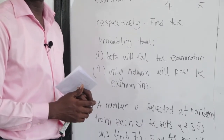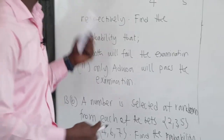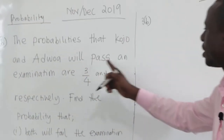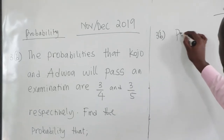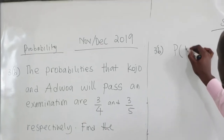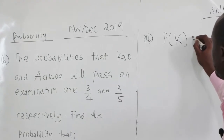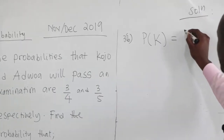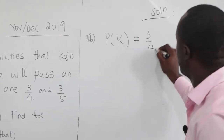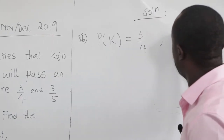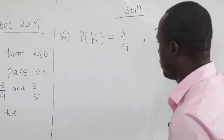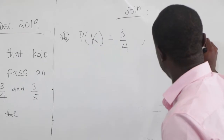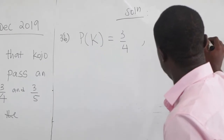How do you solve questions like this? From the question, we have been told that the probabilities that Kujou and Ajuwa will pass an examination are: the probability that Kujou will pass, that is P of K, is 3 over 4. And then the probability that Ajuwa would also pass is 3 over 5.